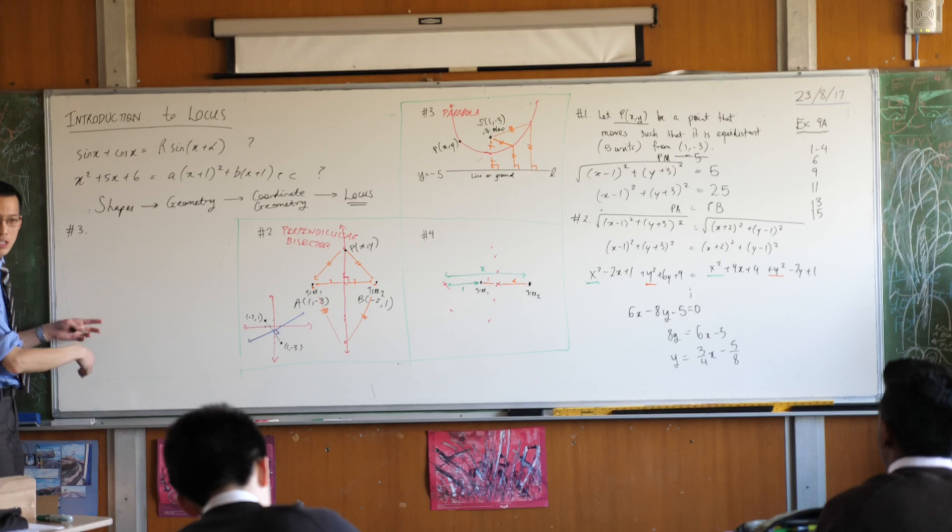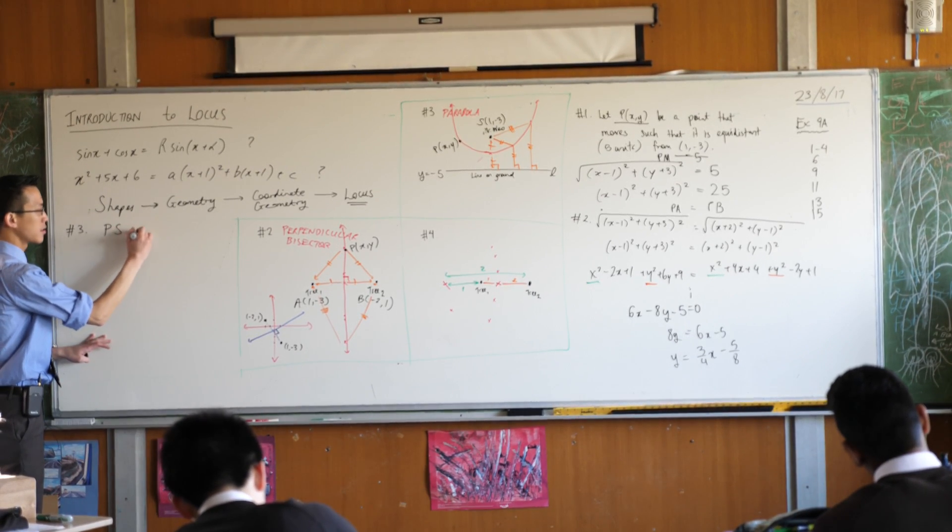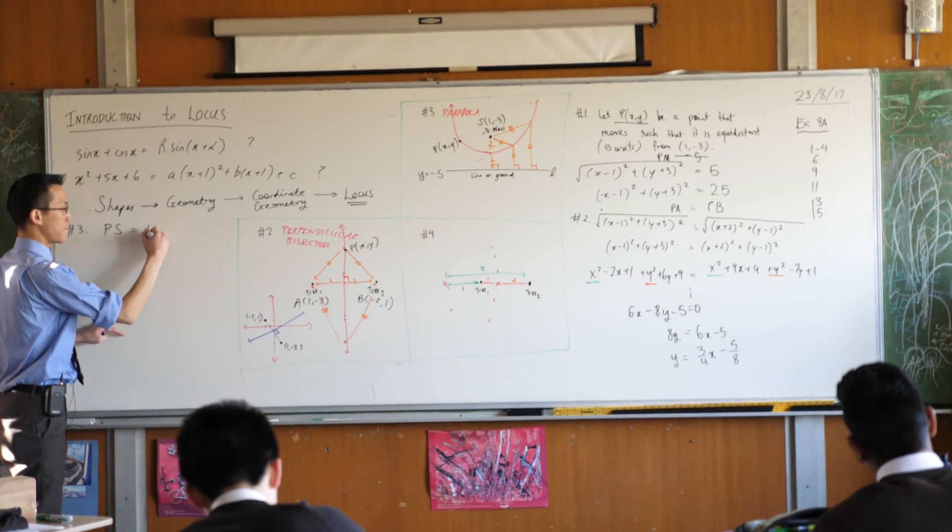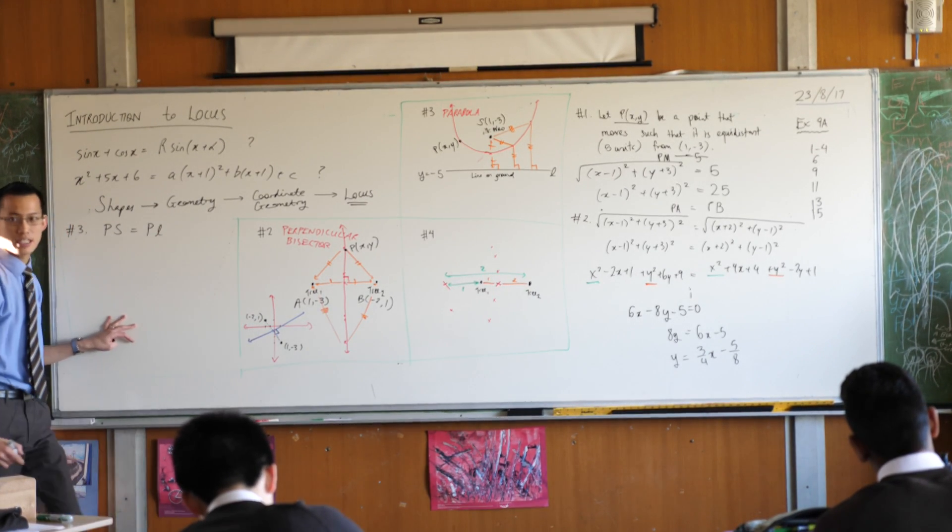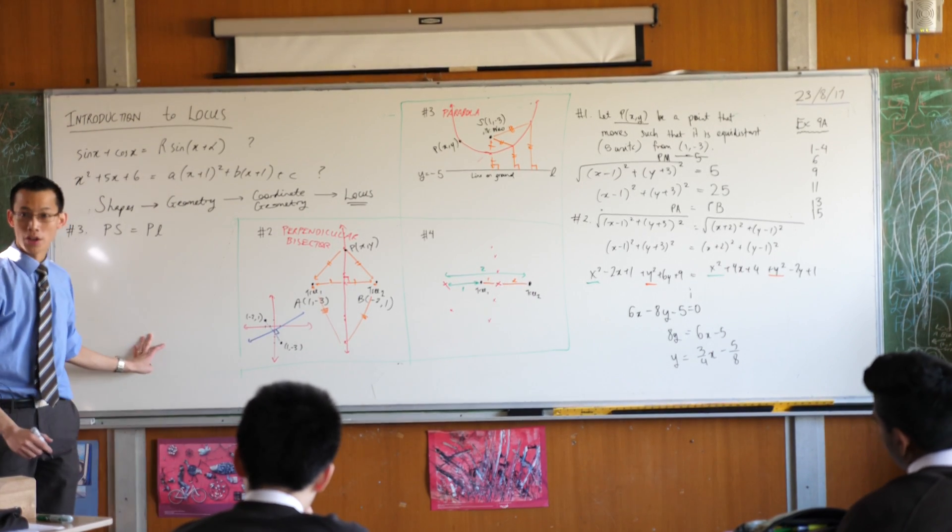So therefore my equation that's going to tell me what this is doing is going to be PS, that's the distance to the fixed point, equals PL, that's the distance to the fixed line. Is that okay?